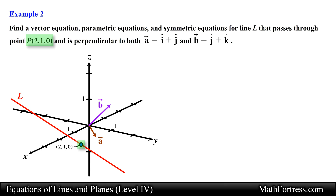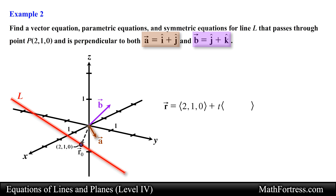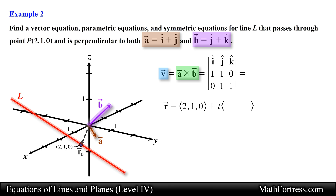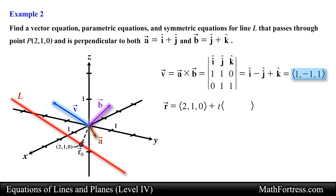The initial position vector for line L will have components equal to the coordinates of point P, so we can start writing the vector equation with this information. To determine a vector parallel to line L requires a bit more work. Since line L is perpendicular to both vector A and vector B, we use the cross product of A and B, which generates a vector perpendicular to both. If you are rusty on the cross product, you can go back and review the cross product video series. Computing the cross product between vector A and vector B, we obtain a vector perpendicular to both, which we use as the direction vector of line L.